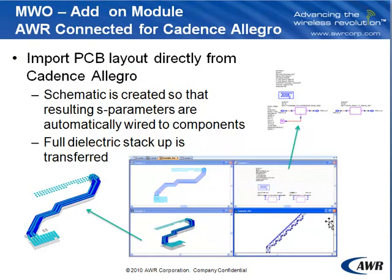Another new module that can be added to your AWR design environment is another AWR connected solution — this new one is for the Cadence Allegro environment. It allows you to take your PCB layouts directly from Cadence Allegro into the AWR design environment. On the fly, it takes that layout and creates a schematic so that the resulting S-parameters for your interconnects are automatically wired up to your components — no manual dropping in of components afterwards. Additionally, the full dielectric stack-up is transferred from Allegro, so you don't have to worry about creating stack-ups before starting simulation. You just import the design, hit simulate, and it goes.